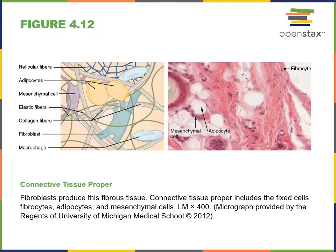Connective tissue proper is the most common and general type of connective tissue found in the body. The cells are dispersed in a non-living matrix that includes an extracellular matrix of fibers and a liquid ground substance with the consistency of maple syrup.